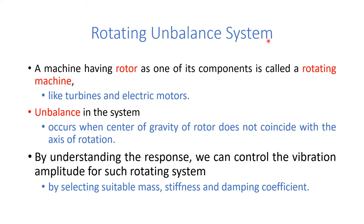A machine having a rotor as one of its components is called a rotating machine, like turbines and electric motors. Unbalance in the system occurs when the center of gravity of the rotor does not coincide with the axis of rotation. By understanding the response, we can control the vibration amplitude for such rotating systems by selecting suitable mass and introducing a stiffness element and a damping coefficient into the system.